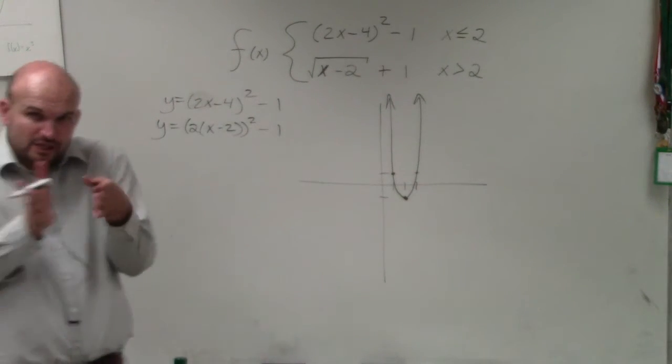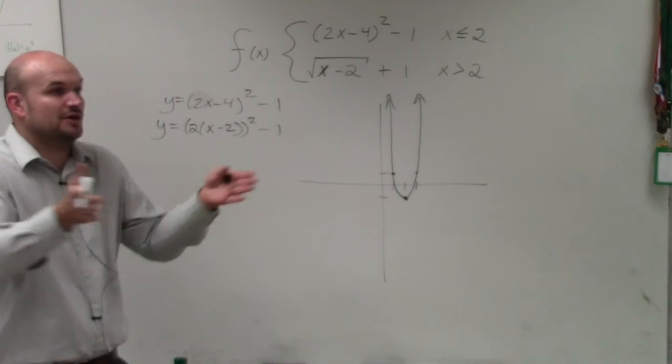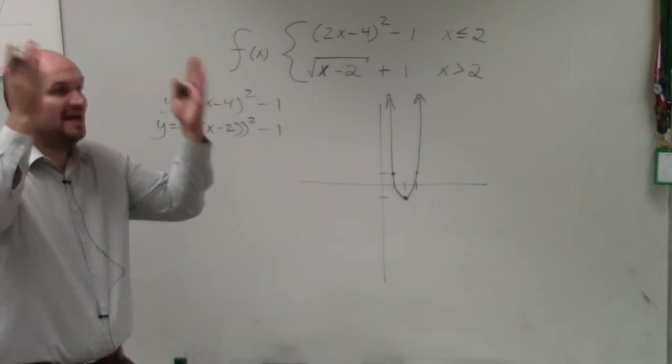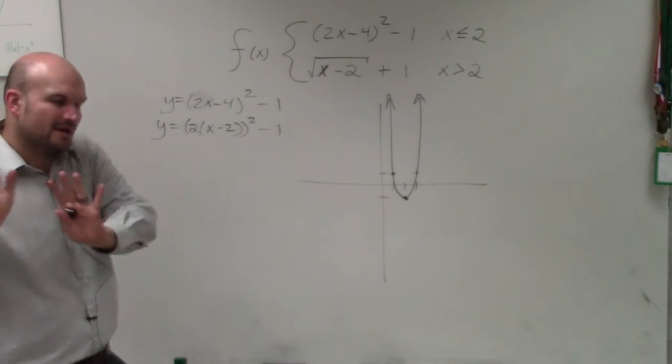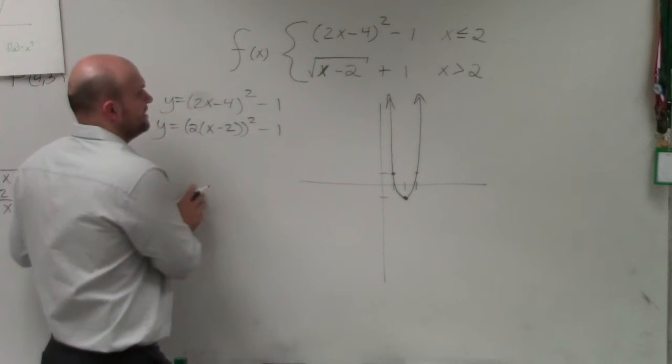So you can see that it's skinnier, right? And you could have also gone over 2, instead of going up 4, up 8, because you're multiplying it by 2. But we don't need to get very specific into that stuff.